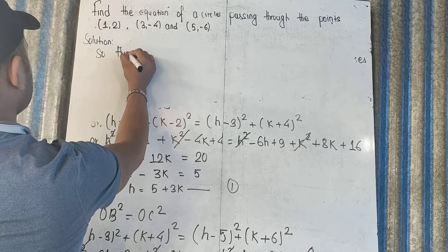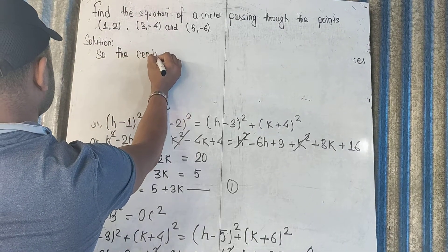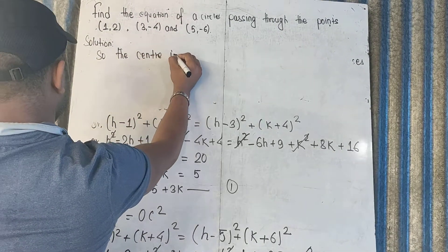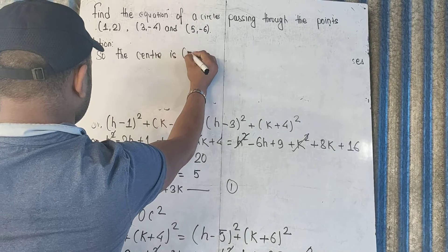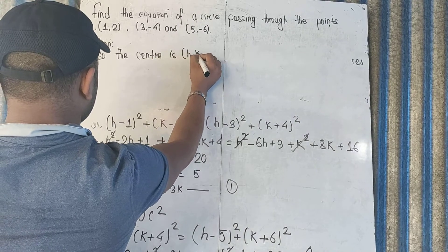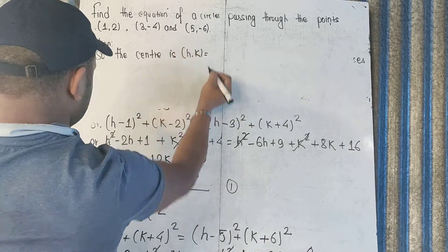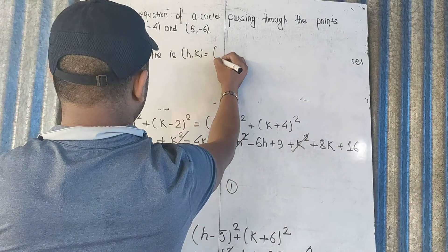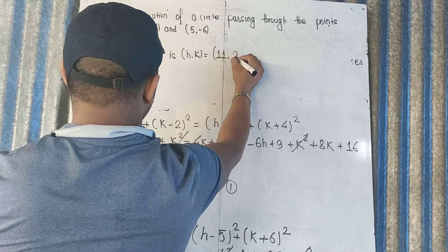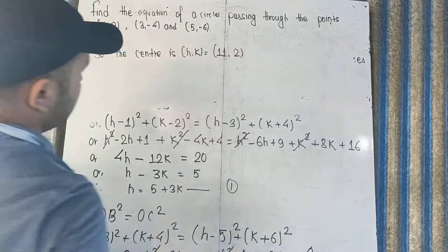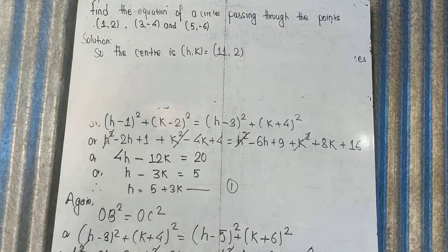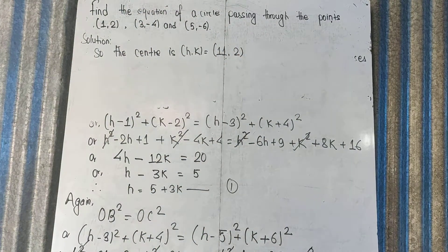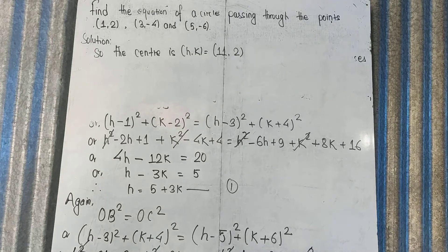So the center is (H, K) equal to (11, 2). Now that we have the center, we still need to find the radius.